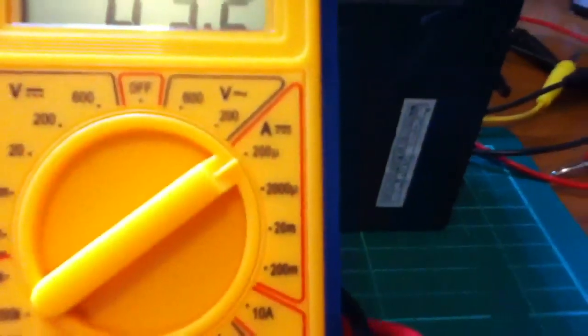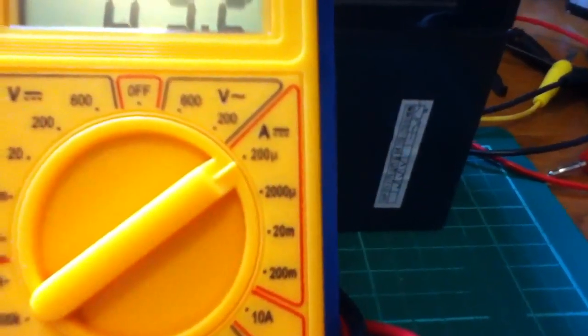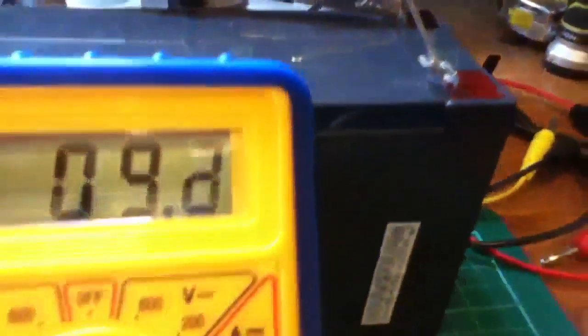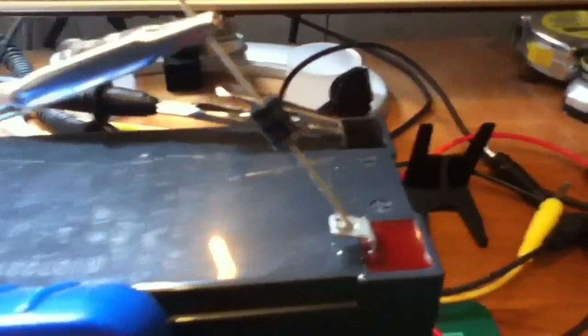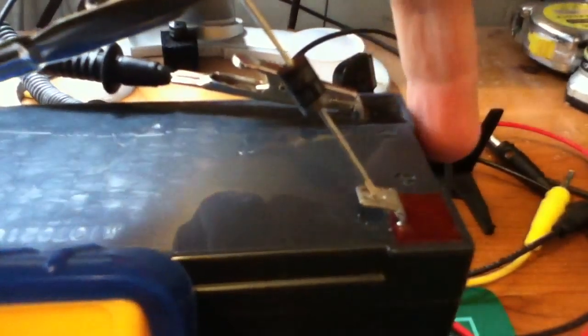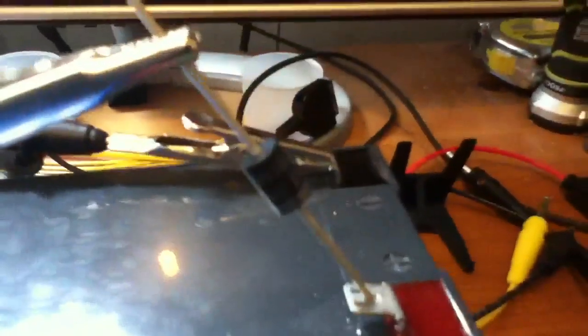So if we look at the ammeter, I've actually got it on the 200 microamp range, so that's 9.2 microamps. So about 10-ish microamps of leakage. You can see that the diode is pointing towards the positive terminal of the battery. So normally this orientation would be for putting current into the battery. But I'm looking at current that's coming back out and flowing through the diode the wrong way.